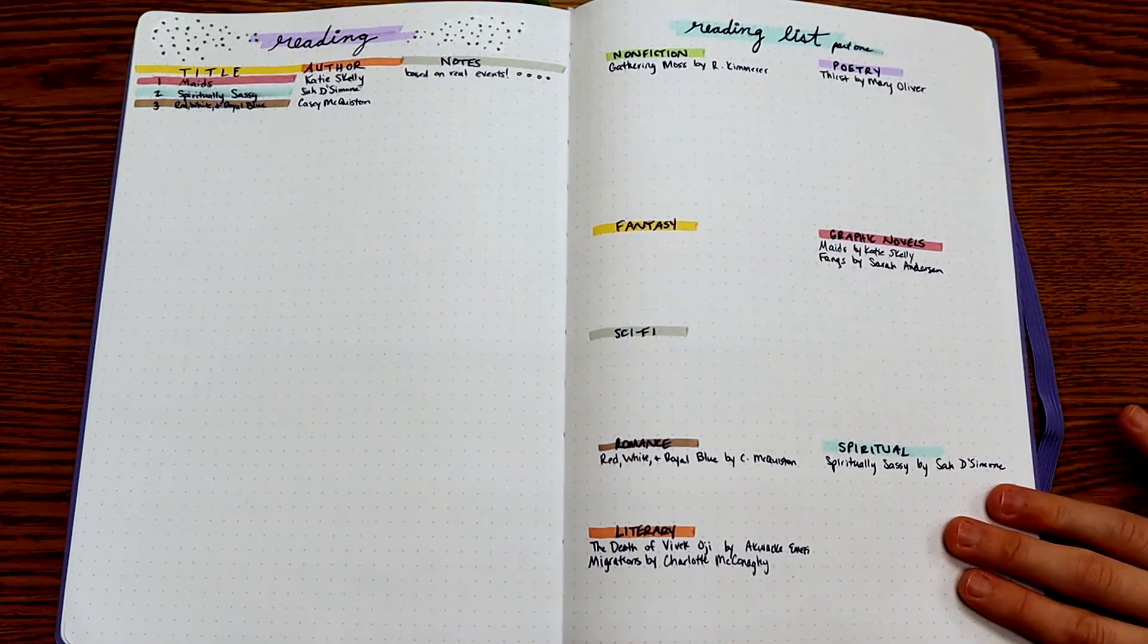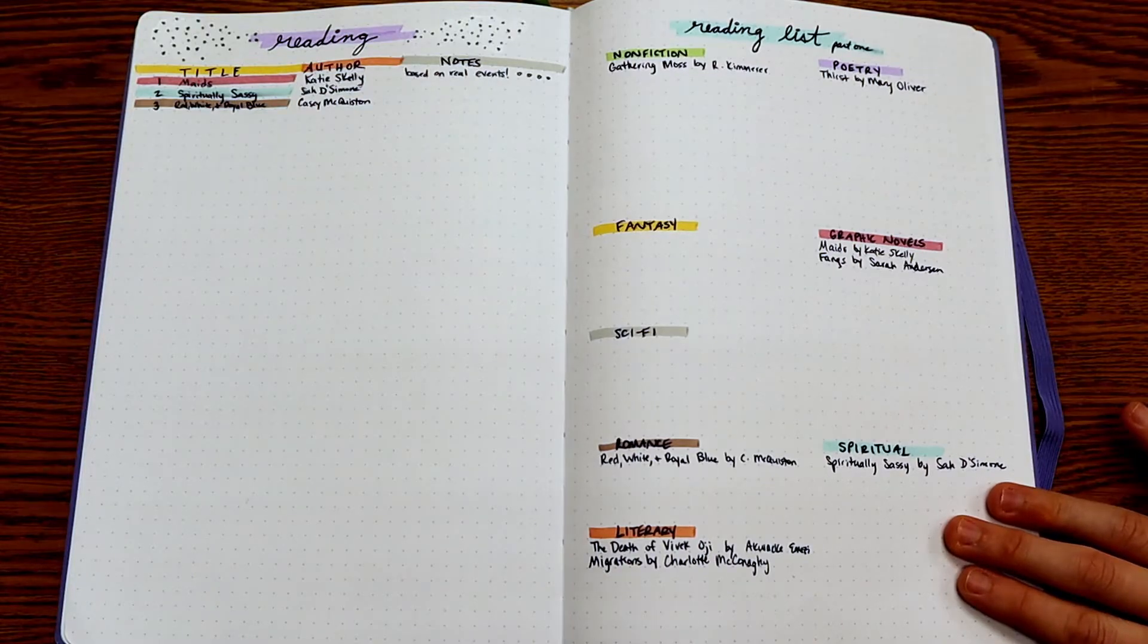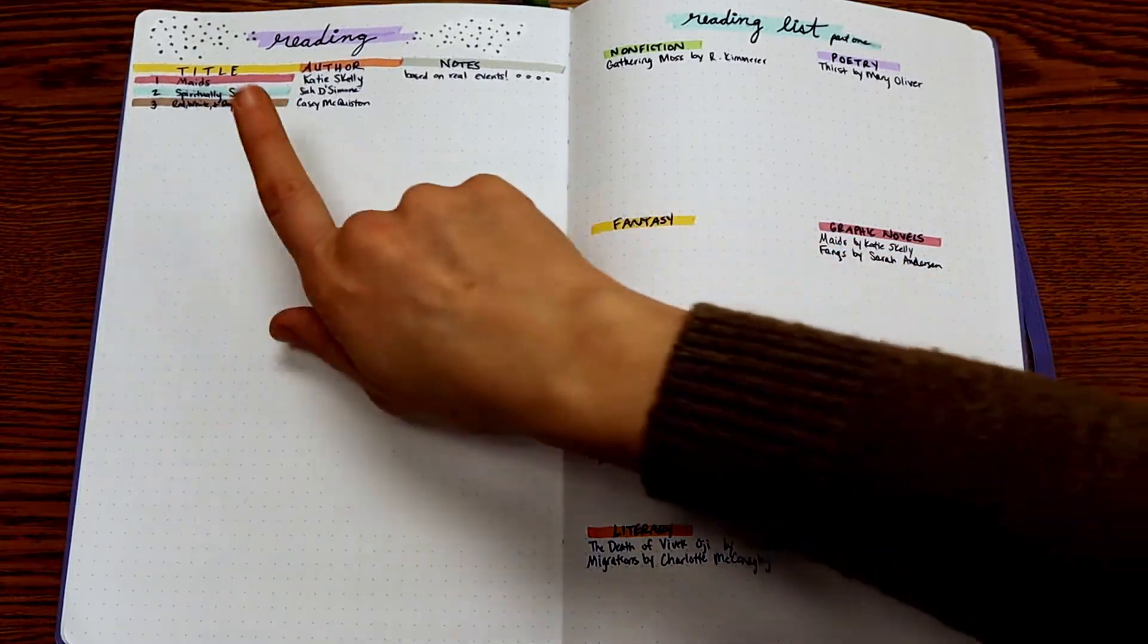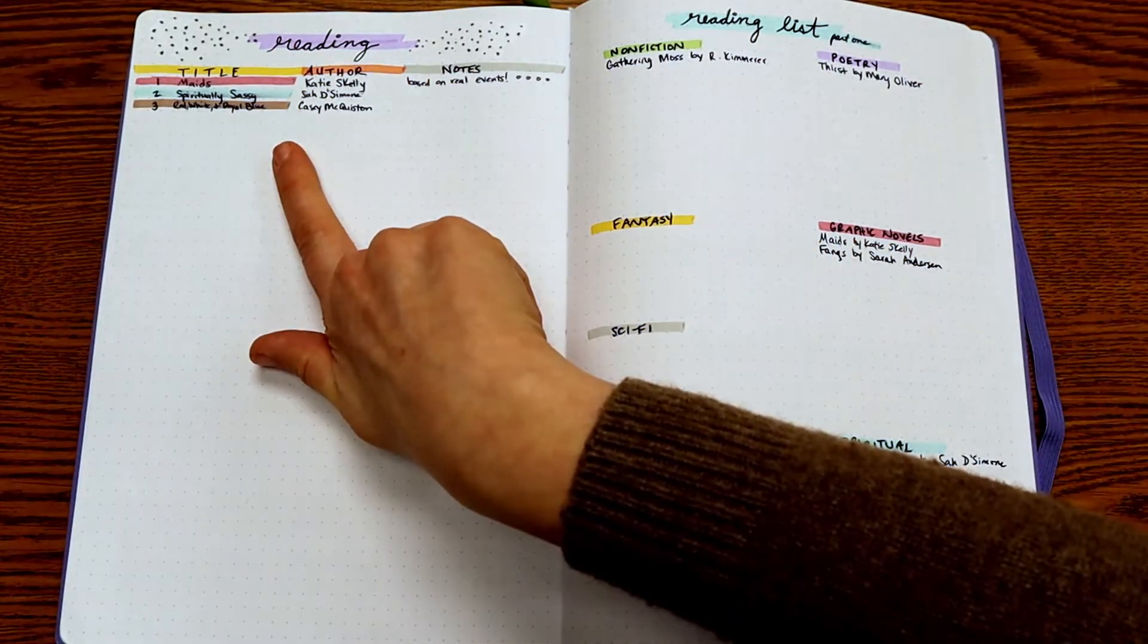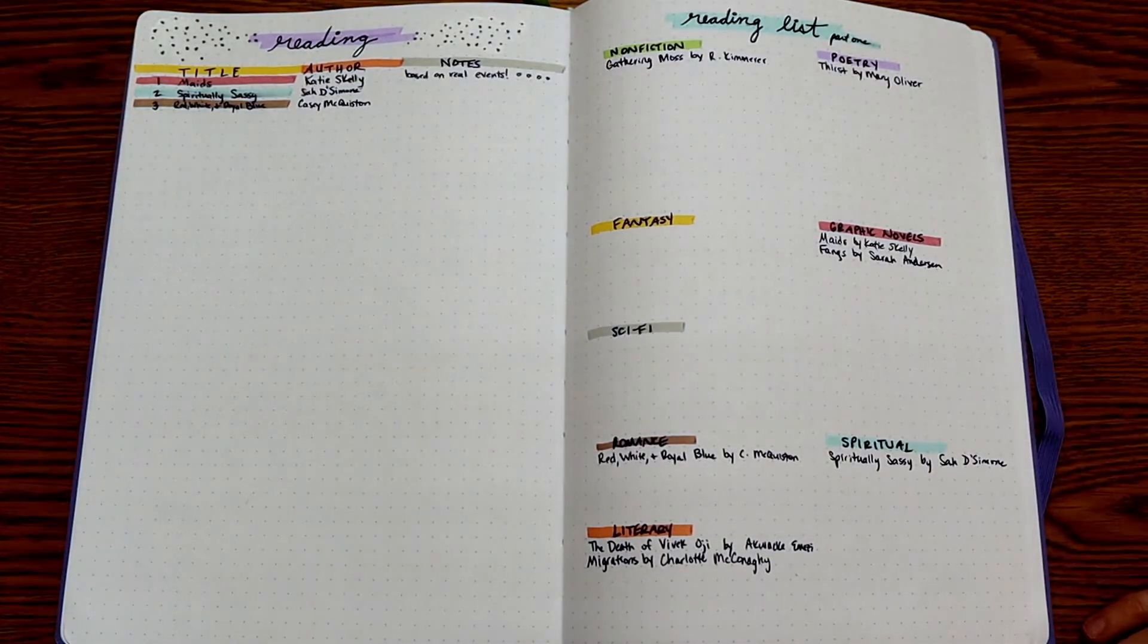And I divide it up into genres. And these are just genres that I am personally interested in. You could divide it up however you want to. And then I assigned each genre a highlighter color so that whenever I put it over on my reading list, then I can see easily what genres I'm reading a lot of and which ones I'm not reading so much of.